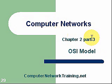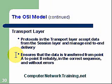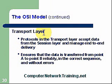Again, Computer Networks, Chapter 2, Part 3 — the OSI model. OSI model continued: the transport layer. We went over the application layer, the presentation layer, and the session layer on the last part. Today we're going to pick up at the transport layer.